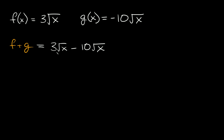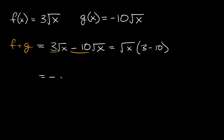Now if you wanted to, you could factor out the square root of x from both of these. So then in the middle we'll just be left with 3 minus 10, and that's equal to negative 7. So we have negative 7 times the square root of x. This would be our simplified answer.